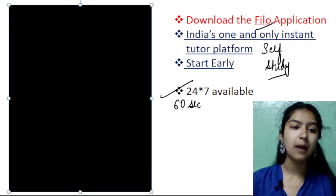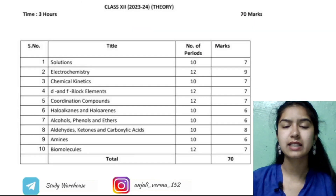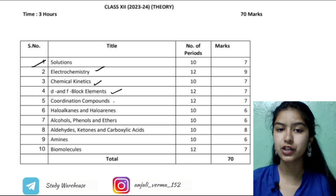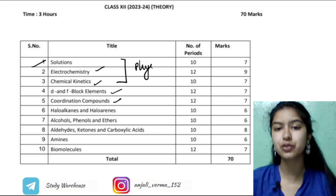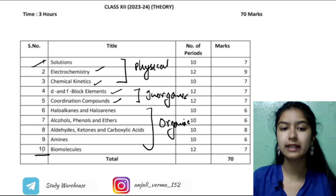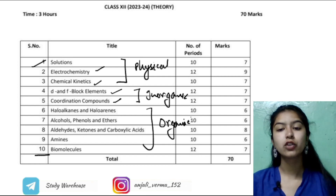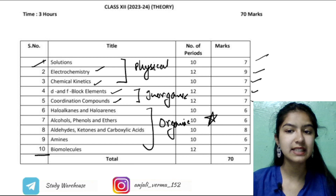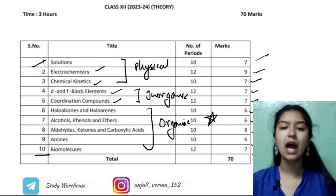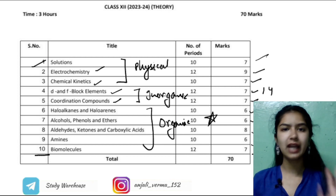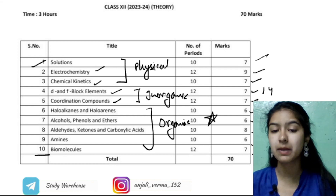Now let's discuss the chapters in the syllabus. First we have Solutions, Electrochemistry, Chemical Kinetics, d&f Block Elements, and Coordination Compounds — these three are in physical chemistry and these two are in inorganic chemistry. After these come the organic chemistry chapters. In total we have ten chapters. Organic chemistry is the most important — looking at the marks distribution: 7, 9, 7, 7, 6, 6, 8, 6, and 7. So organic chemistry is the most important, followed by inorganic chemistry.